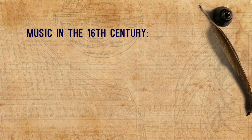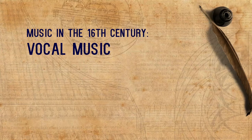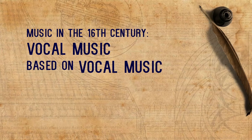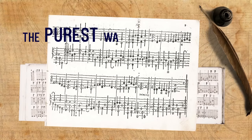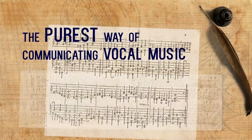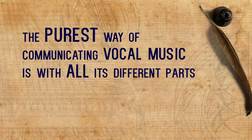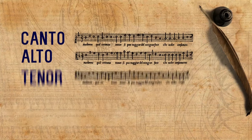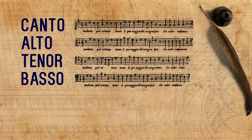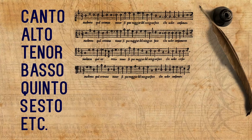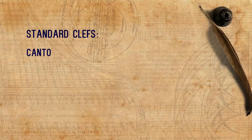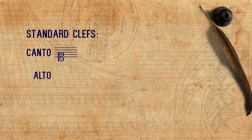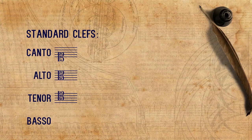Music in the 16th century, for the most part, was either vocal music or based on vocal music. As opposed to tablatures and intabulations, the purest way of communicating vocal music is with all its different parts — typically canto, alto, tenor, basso, and very often some more parts. The standard clefs used for vocal music are the following: the canto with clef C1, the alto with C3, the tenor with C4, and the bass with F4.